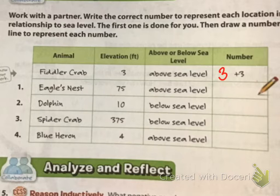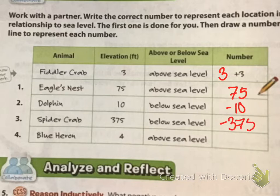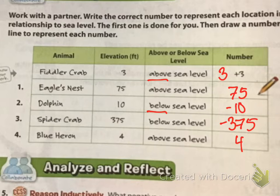Eagle's nest is 75. Romario — dolphin: negative 10. Anita — spider crab: negative 3. Roman — blue heron: 4. Exactly. We've gone over these before. When we see the word 'above,' we know it's positive. When we see the word 'below,' we know it's negative. Above — positive. Below — negative.